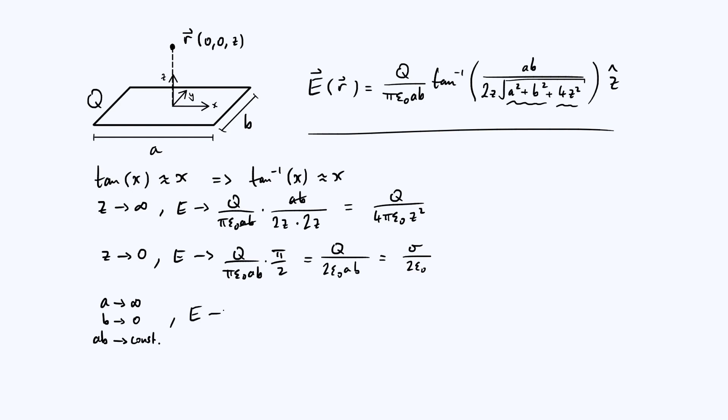So what happens to the electric field? In this case, we've still got our pre-factor q over pi epsilon 0 a b. Let's keep the arctan in for now, so inverse tan of what's going to happen to the argument. Well, the dominant factor in this square root bit, because a is going to infinity and b is going to 0, the a is going to be the dominant term there. So this square root bit just simplifies approximately to the square root of a squared, which is just a, and so your argument is now a b over 2 z a approximately, and so the a's cancel, which gives you q over pi epsilon 0 a b arctan of just b over 2 z.